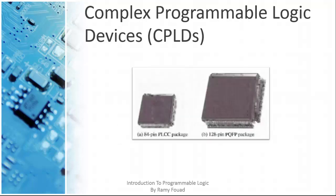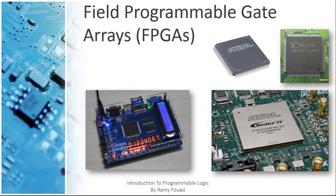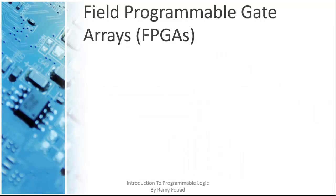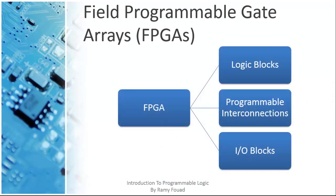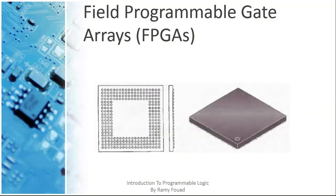CPLDs are available in a variety of configurations, typically ranging from 44 to 150 pin packages. FPGAs are generally more complex and have a much higher density than CPLDs, although their applications can sometimes overlap. SPLDs and CPLDs are closely related because a CPLD basically contains a number of SPLDs, but the FPGA has a different internal structure.